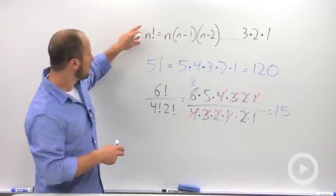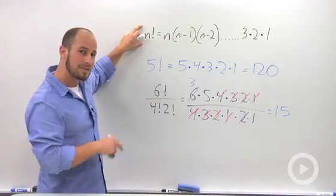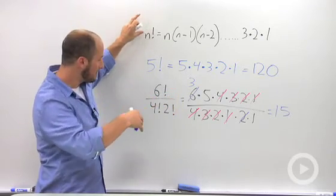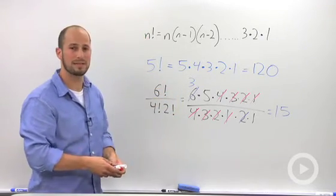So, the definition of a factorial is just taking that number, multiplying it by everything below it, and there are easier ways to simplify it.